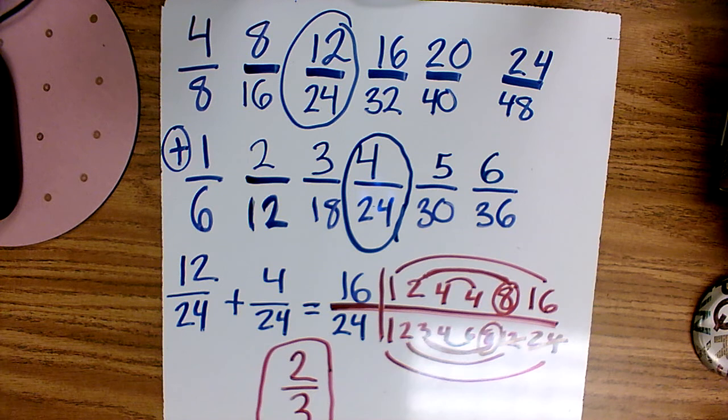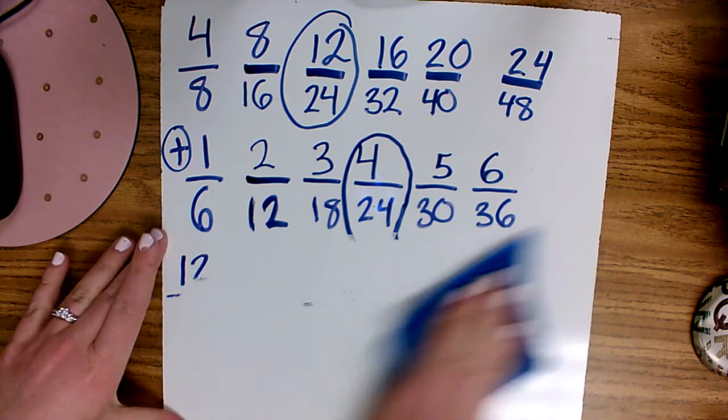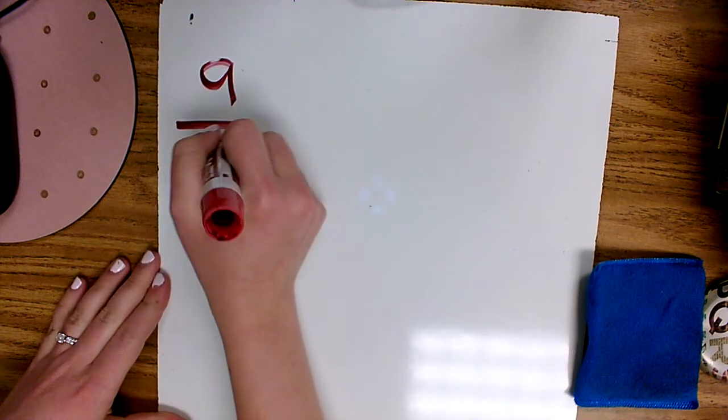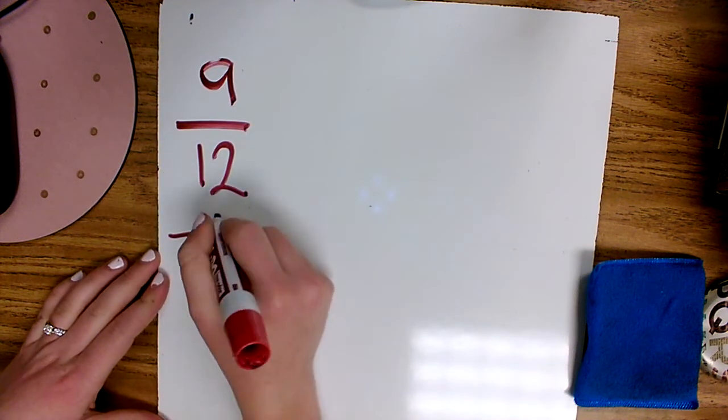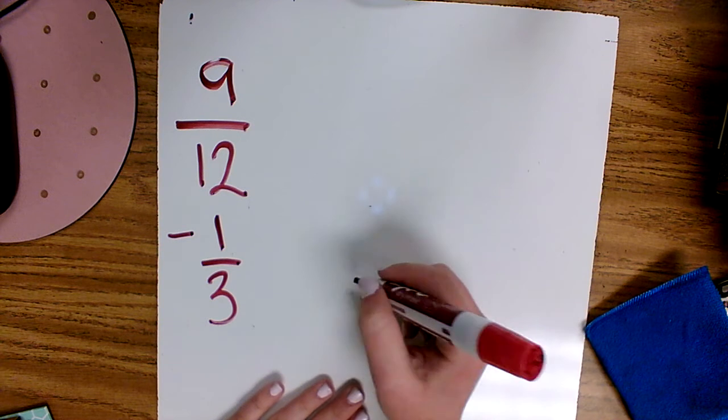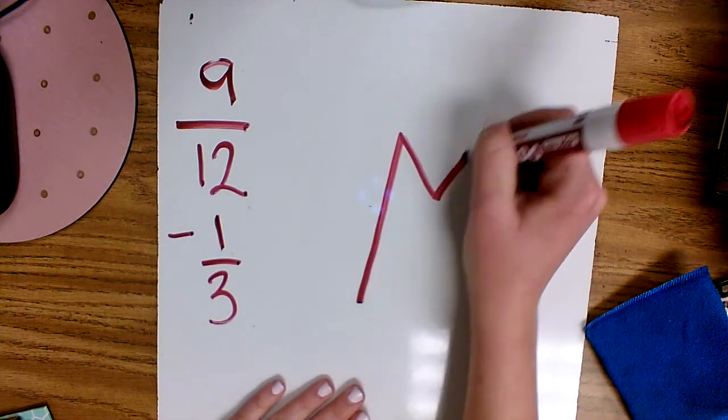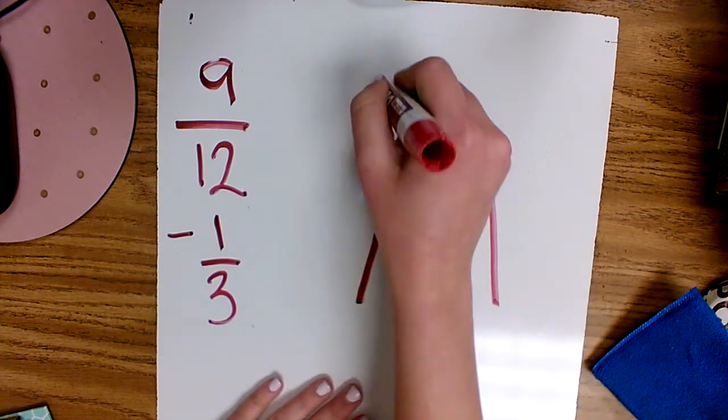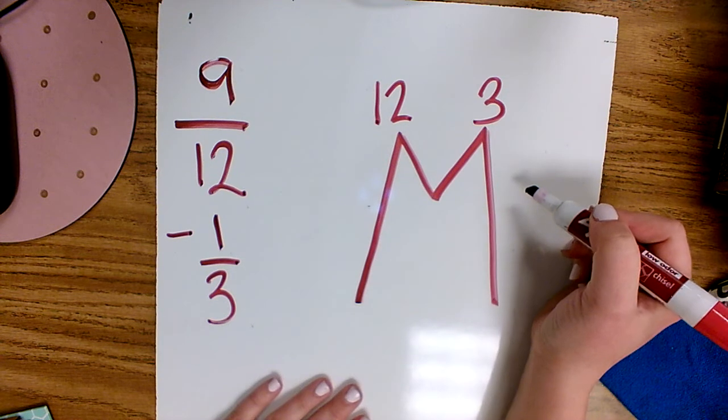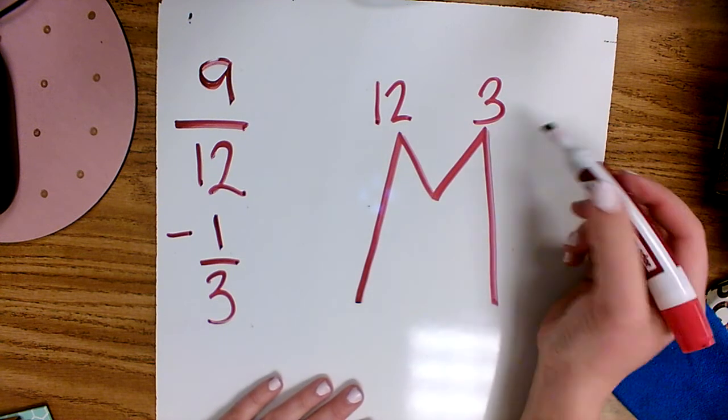The other method uses least common multiple. So I'm going to put a different fraction up for that one. Let's do it with nine-twelfths and subtracting one-third. In this method we use LCM which we've already learned in class. So I'm going to take my denominators, twelve and three, and find the least common multiple, the least common multiple that they share.